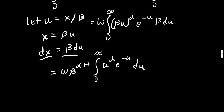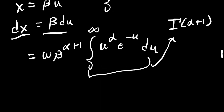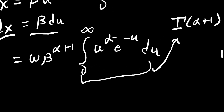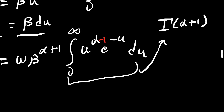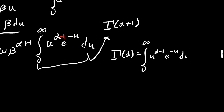This integral is not gamma of alpha exactly — it's gamma of alpha plus 1, because in the actual gamma function the exponent on u should have a minus 1. Since the exponent here is just alpha, we say it's gamma of alpha plus 1. Recall that gamma of alpha is the integral from 0 to infinity of u to the alpha minus 1 times e to the negative u du — often written with t and z variables, but we substitute alpha in.